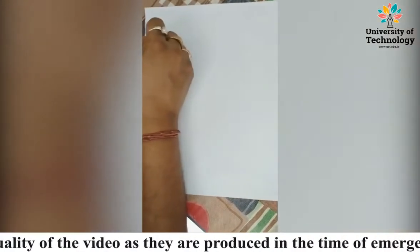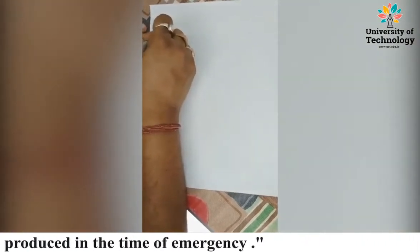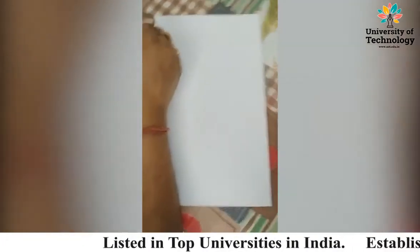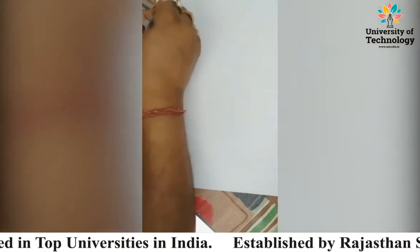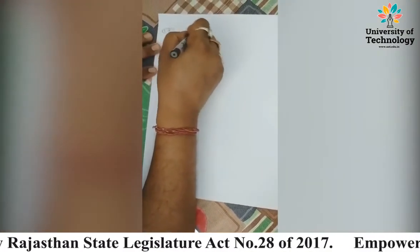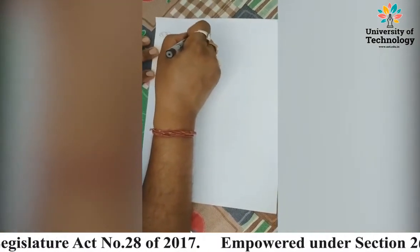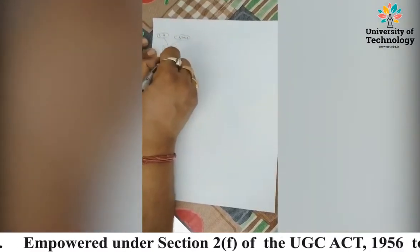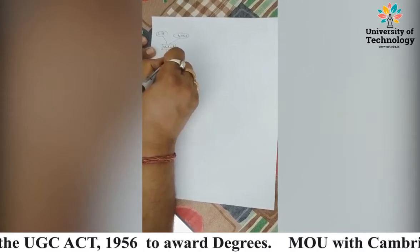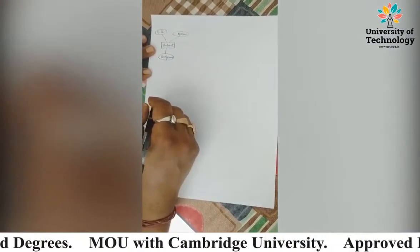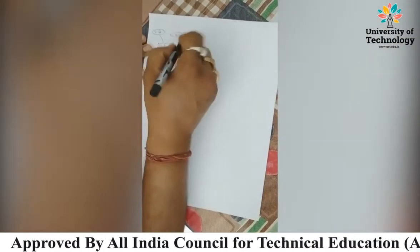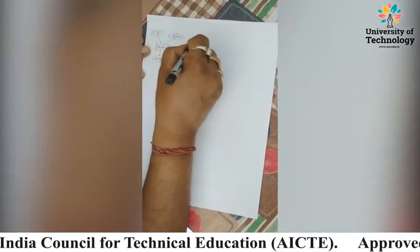Please see this diagram. One entity taken is Student. Inside the Student entity, the attributes are: s_id (the student's own ID), s_name (the student's name), and program. Those are the attributes of the Student entity.